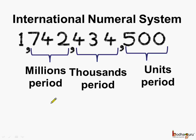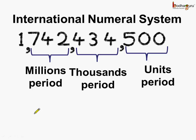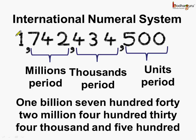Then we have the millions period. The period consists of three places left of the thousands period, and we get the third comma here, which marks the starting of billions. So this number can be read as one billion, seven hundred forty-two million, four hundred thirty-four thousand and five hundred.